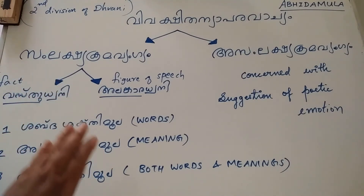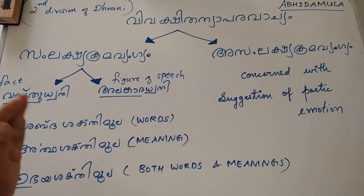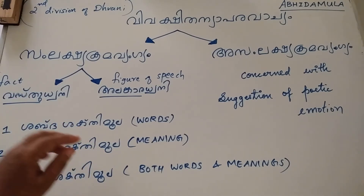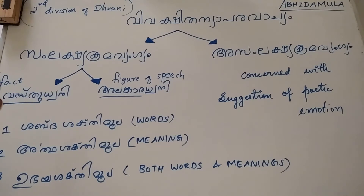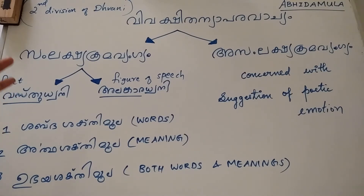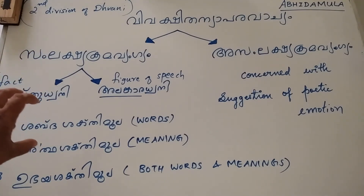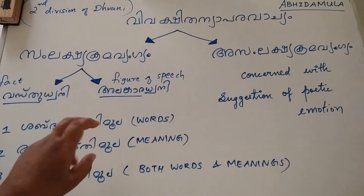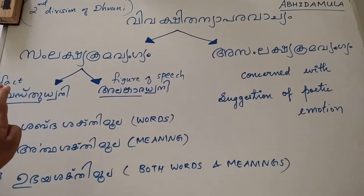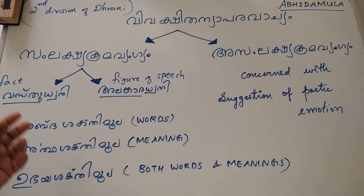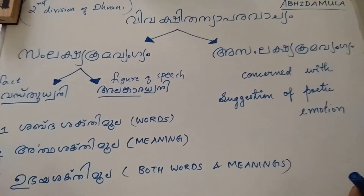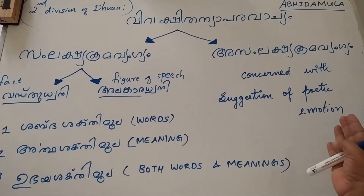There is a primary sense and a suggested sense. How do we reach that suggested meaning? It is by identifying what vibhava is intended there. There is a concrete, solid vibhava present. We try to find out the solid root cause or the vibhava, and then slowly, step by step, we reach the suggested sense. So the stages intermediate between the primary or expressed sense and the suggested sense are rather perceptible in Samlakshya Krama Vangya.